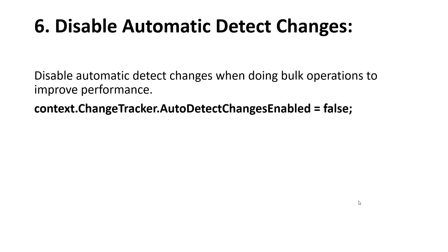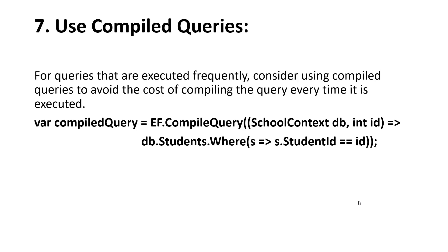The sixth tip is to disable automatic detect changes when doing bulk operations to improve performance. You can do this by setting context.ChangeTracker.AutoDetectChangesEnabled to false before performing bulk operations.